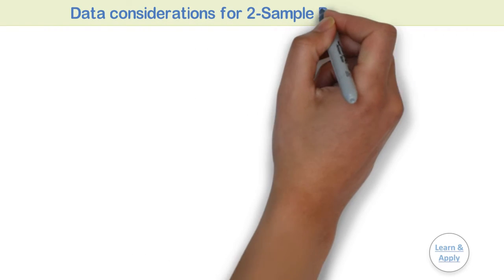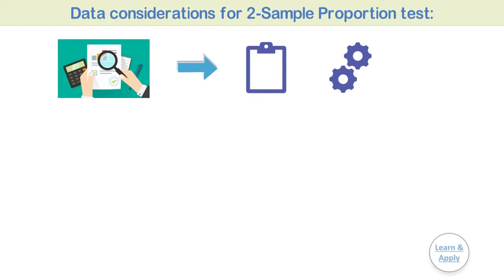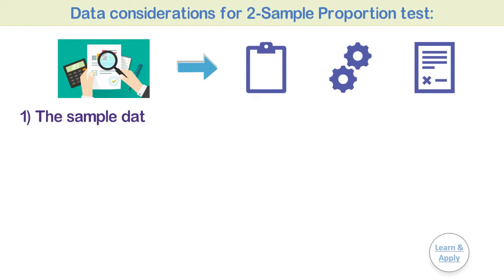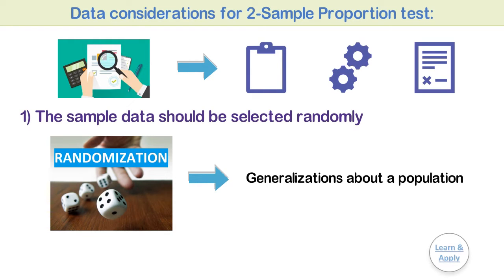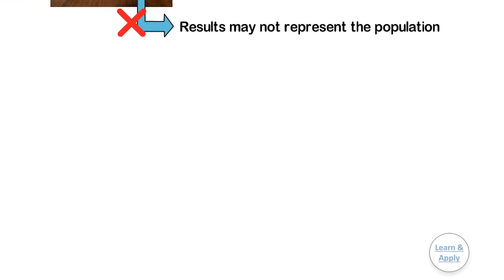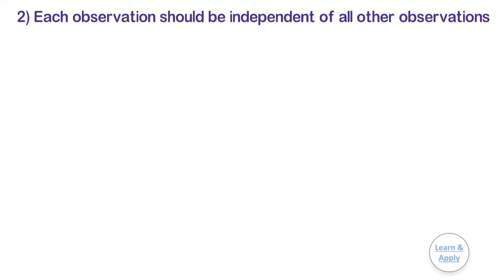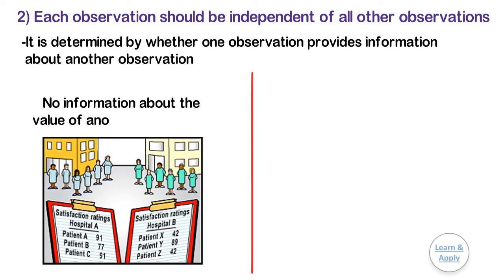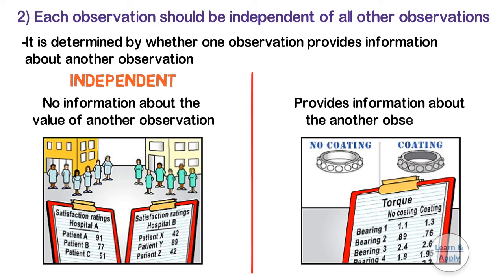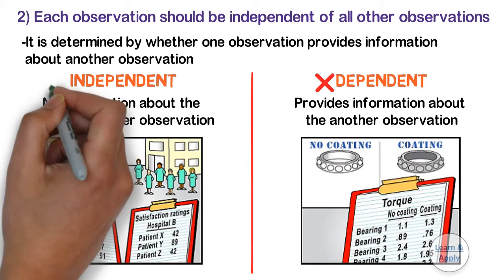Data considerations for 2 sample proportion test. To ensure that your results are valid, consider the following guidelines when you collect the data, perform the analysis, and interpret your results. First, the sample data should be selected randomly. In statistics, random samples are used to make generalizations or inferences about a population. If your data is not collected randomly, then your results may not represent the population. Second, each observation should be independent of all other observations. If an observation provides no information about the value of another observation, the observations are independent; if an observation provides information about another observation, the observations are dependent, and your results may not be valid.